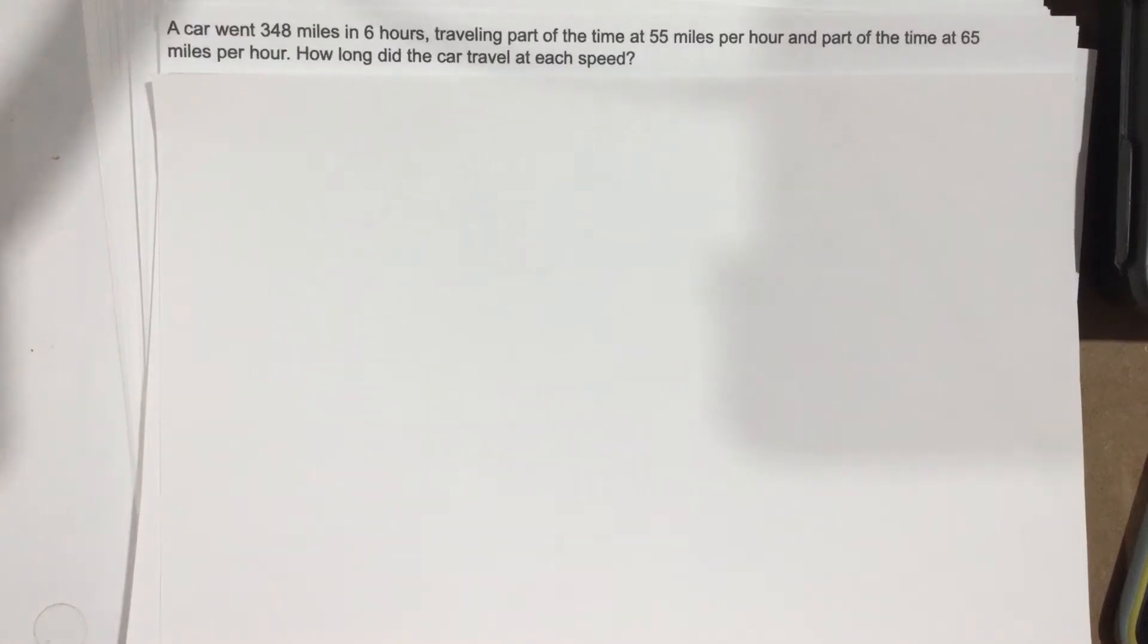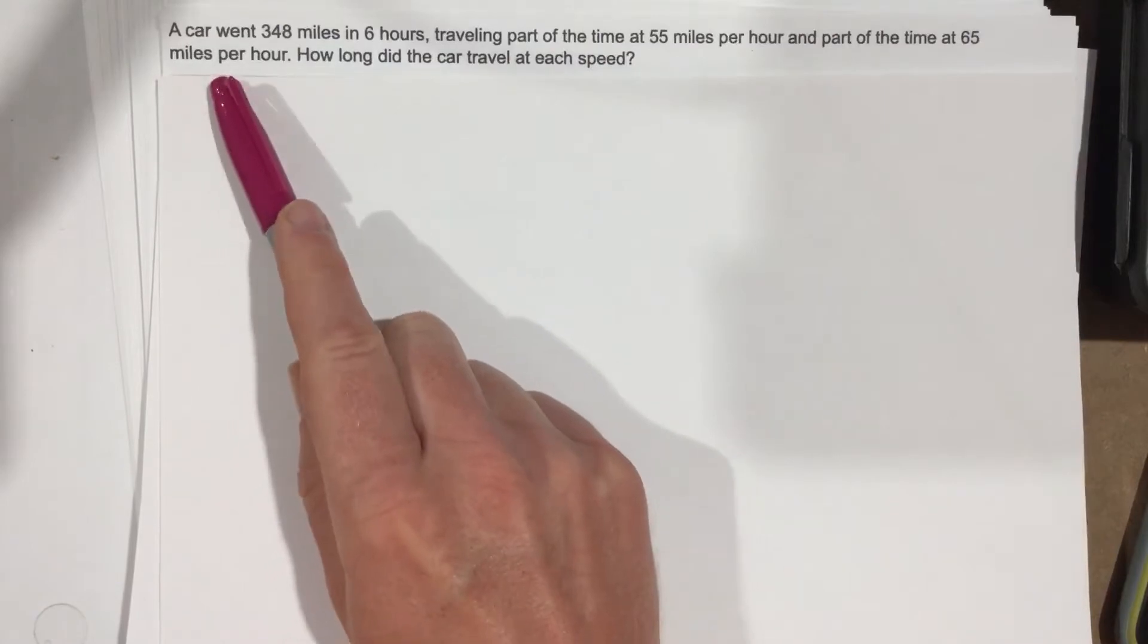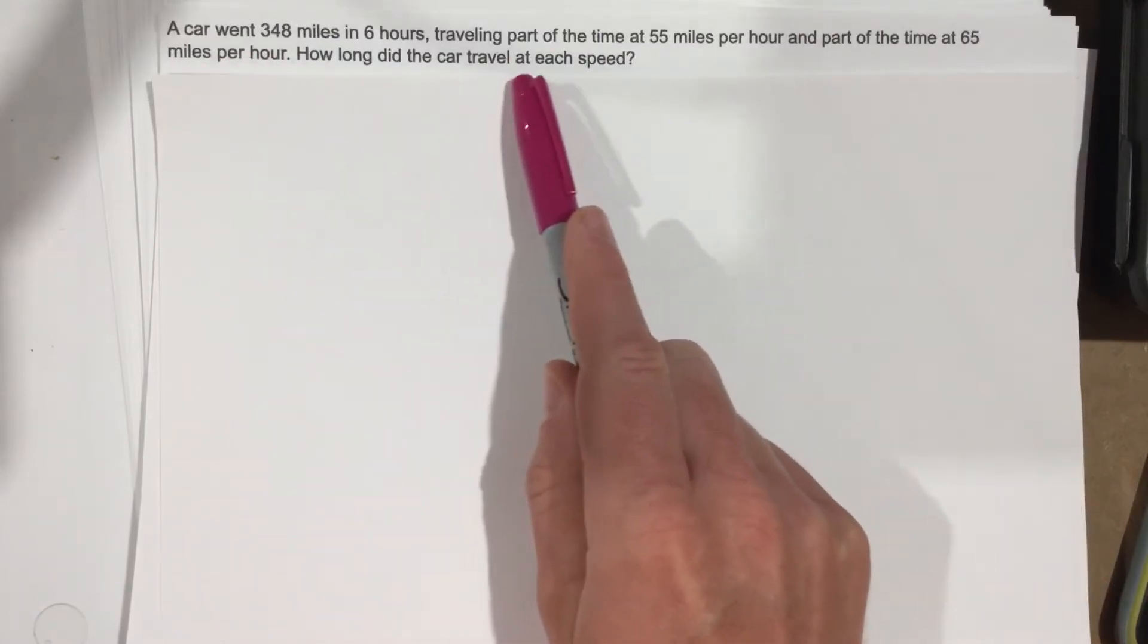This is problem number 8 from section 2.2. It says a car went 348 miles in 6 hours, traveling part of the time at 55 miles per hour and part of the time at 65 miles per hour. How long did the car travel at each speed?